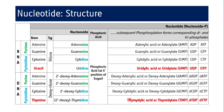Thymidylate is not called deoxythymidylate because thymine only binds with deoxyribose — there is no exception to that, so it is understood. Also, when we write AMP or dAMP without specifying a position, it is understood to be the 5' form, since 5' nucleotides are most common. When it is a 3' nucleotide, we specifically mention 3'-AMP or 3'-dAMP.